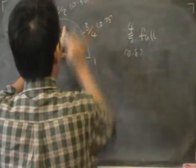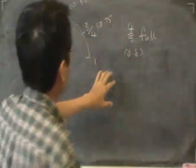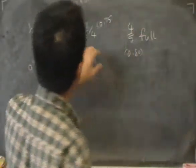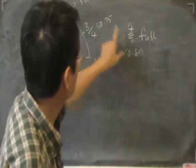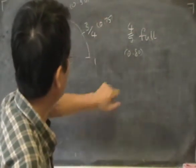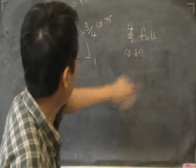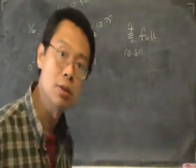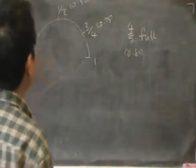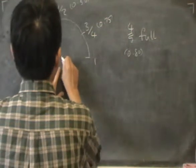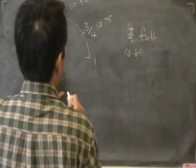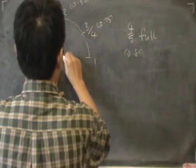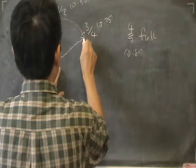So 0.5 is the same as 0.50. If you're comparing the numbers, it would be comparing 80, 75, and 50. So clearly 0.8 is a bit more than 0.75. So therefore I can draw the dial just a little bit after the three-quarter mark, like that.